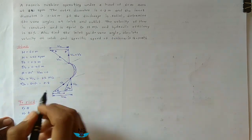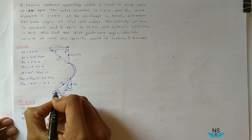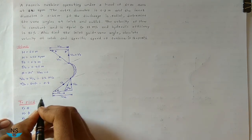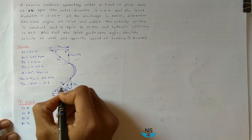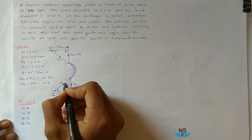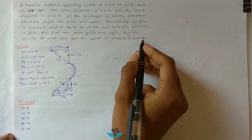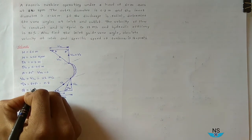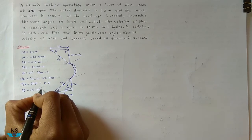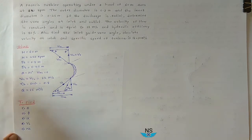We also need to find: the inlet guide vane angle alpha, the absolute velocity at inlet V1, and the specific speed Ns. The discharge Q is given as 10 cubic meters per second.